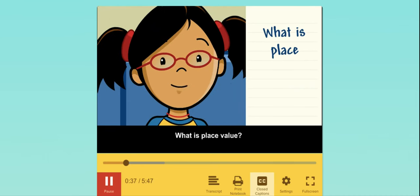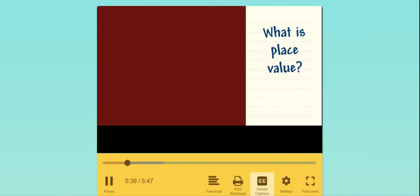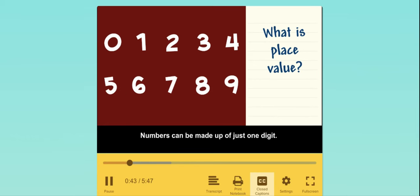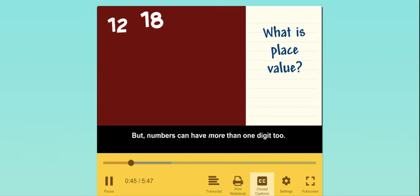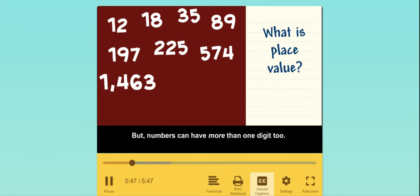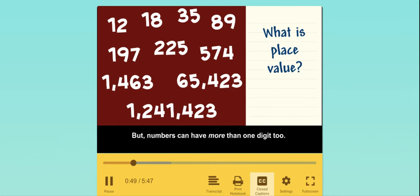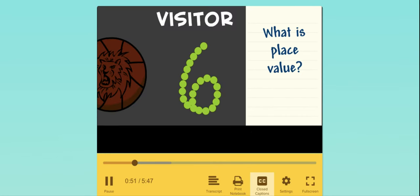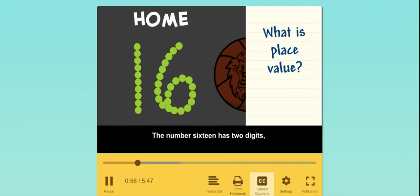What is place value? Numbers can be made up of just one digit, but numbers can have more than one digit too. The number six has only one digit. The number 16 has two digits: one and six.